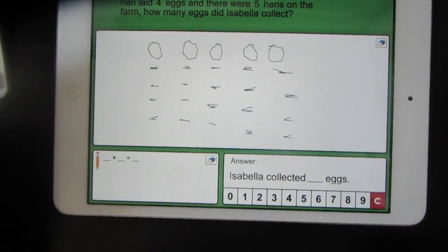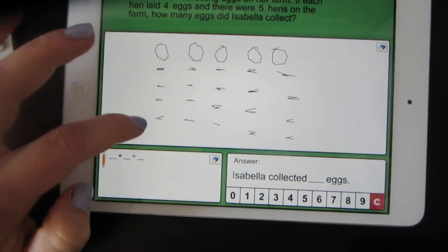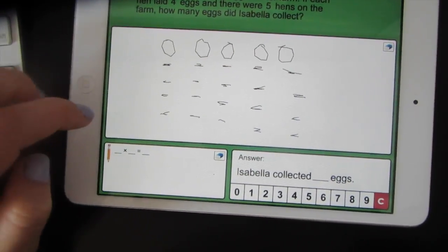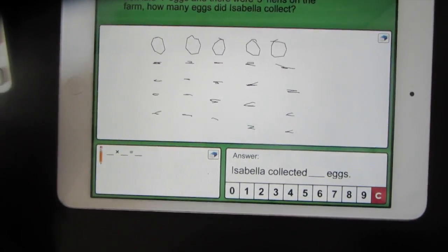How many eggs did Isabella collect? Well, these are all the eggs she collected. You can count them up to see she collected 20 eggs in all.